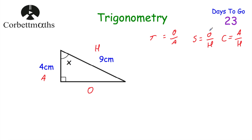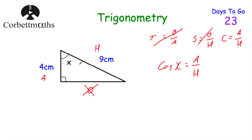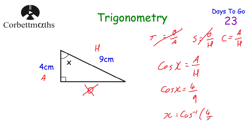We're using the adjacent (4 cm) and the hypotenuse (9 cm), and not using the opposite, so we cross off tan and sine. We use cos. So cos X equals adjacent over hypotenuse, which is 4 over 9. To find the angle, we do the inverse cos of 4/9. On the calculator, press shift cos and type in 4/9. We get X equals 63.612 degrees to three decimal places.